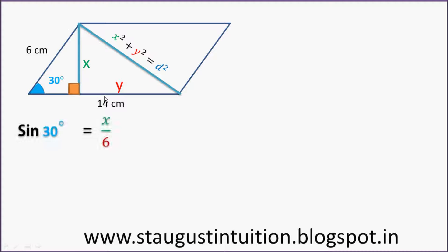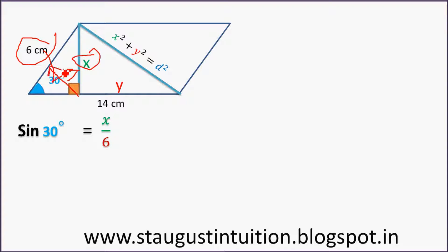Consider this right triangle. The hypotenuse is the side opposite 90 degrees. Using sin: sin of the angle equals opposite over hypotenuse. So sin 30 = x divided by 6, and therefore x = 6 × sin 30.